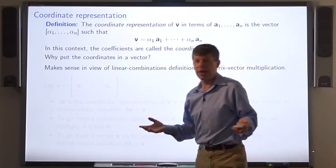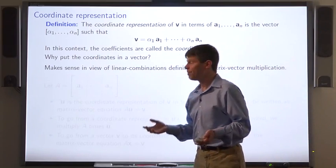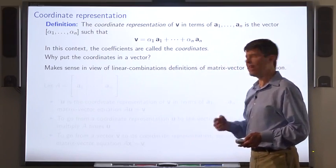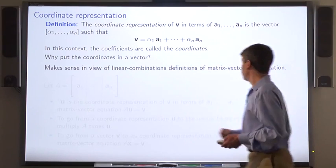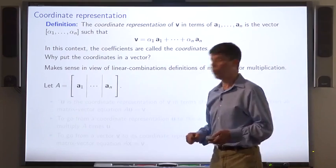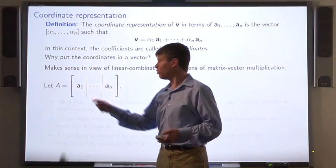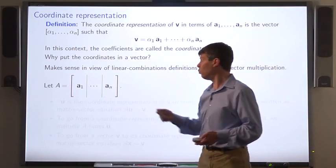Now, why are we going around putting coordinates in a vector? It makes sense when you think about the linear combinations definition of matrix vector multiplication. So let A be the matrix whose columns are the vectors a1 through an.